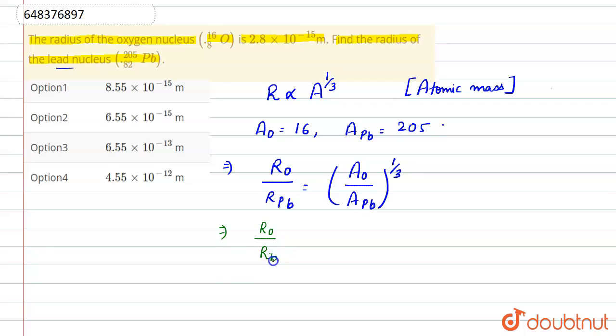So atomic mass of oxygen is 16 upon 205 to power 1 upon 3. We need to calculate the radius of Pb.